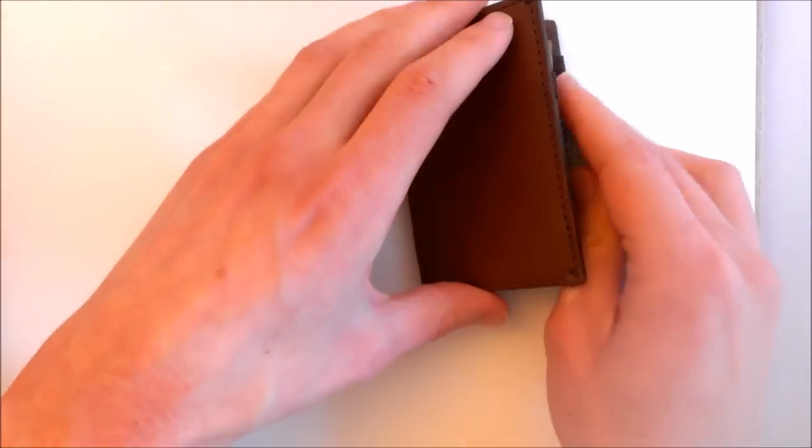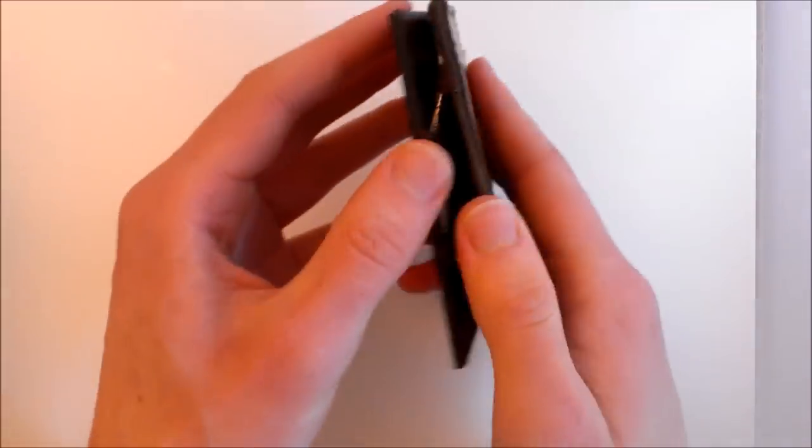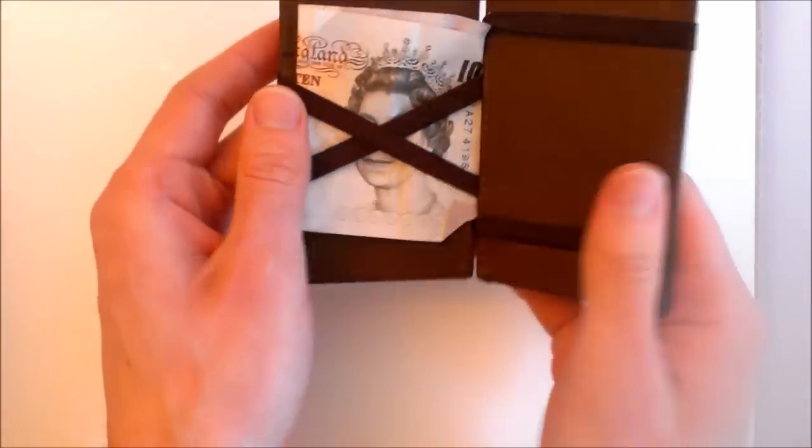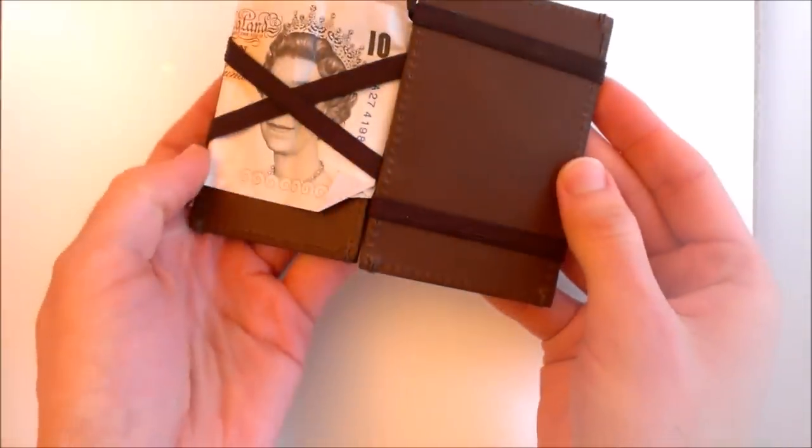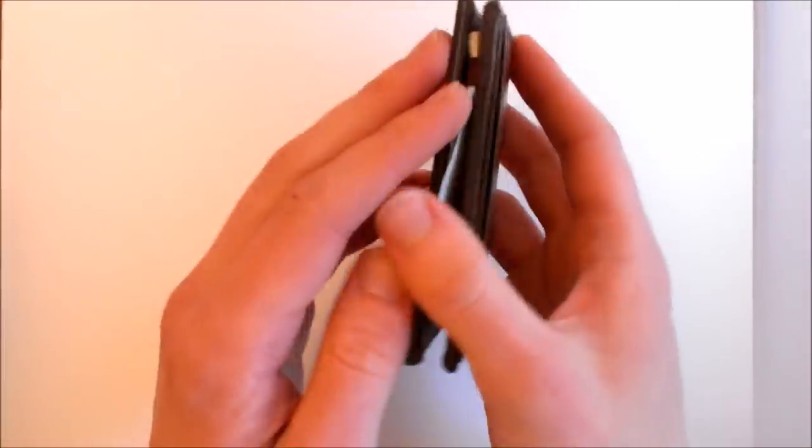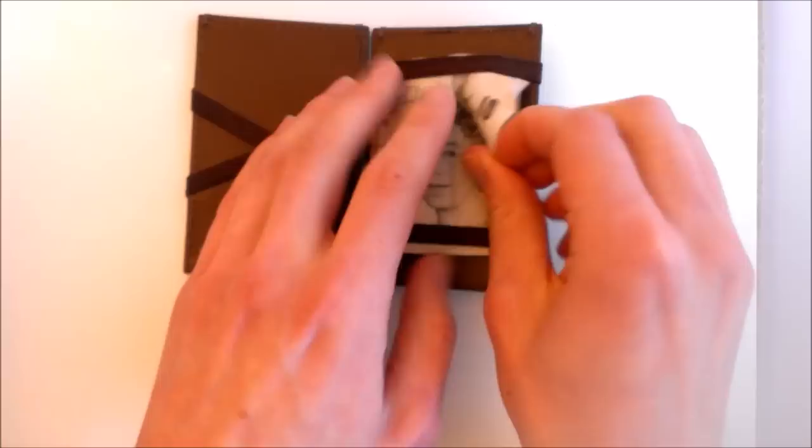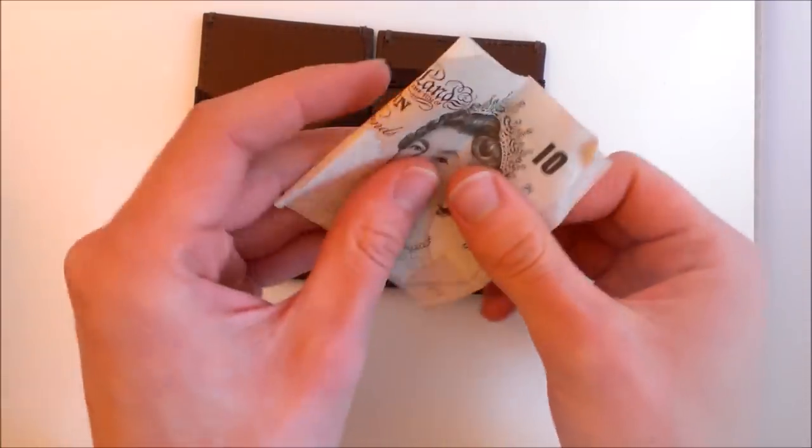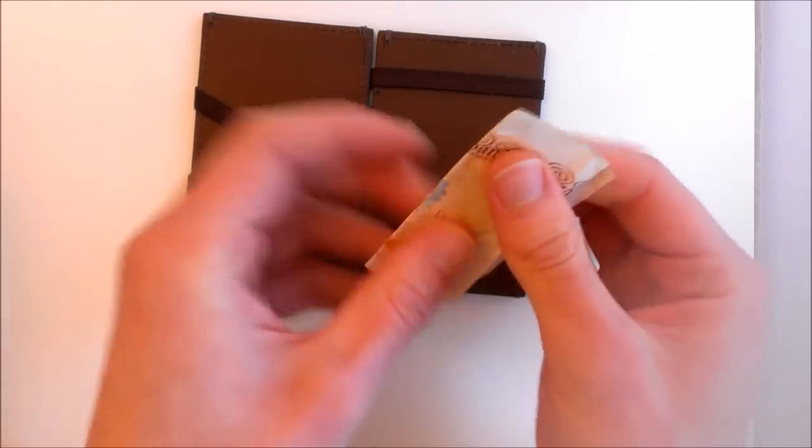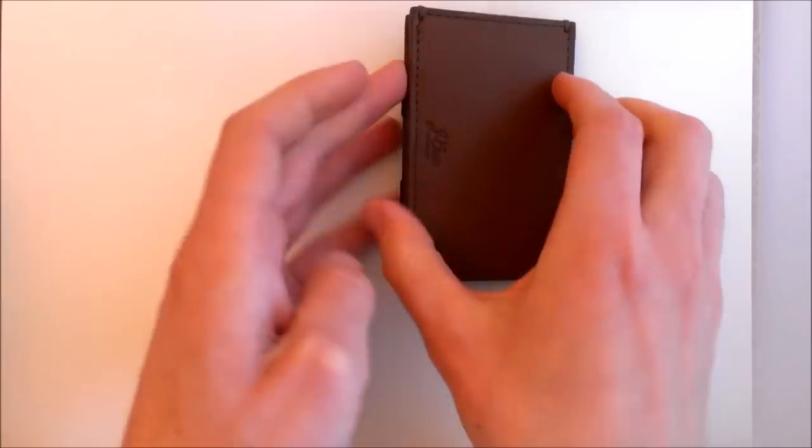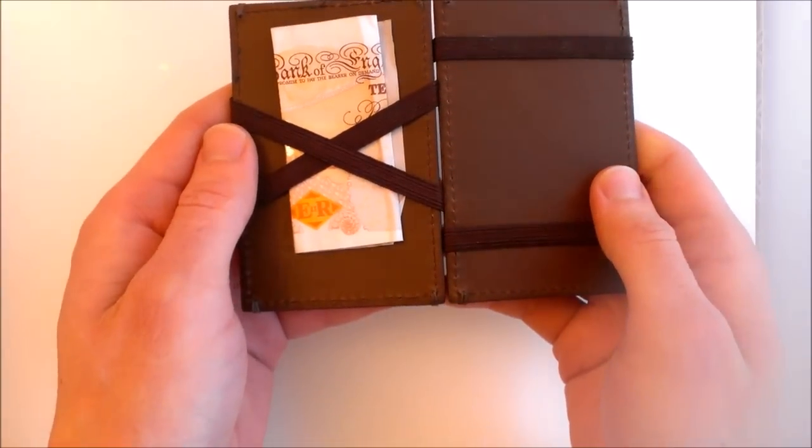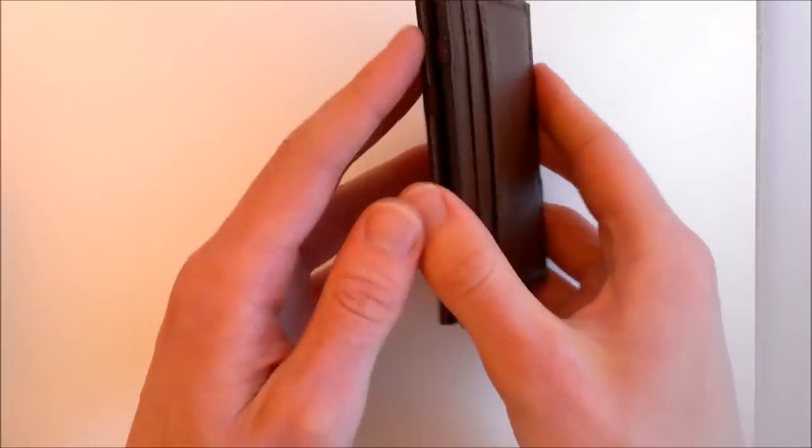With a ten pound note, you're going to see the slight problem we've got here in that it's catching in the middle there, and after a while that's going to tear, that's going to get really tatty. You can see right in the middle there it's catching because this is another American design wallet, designed for dollars. So all we're going to need to do is just fold this into quarters and then it's going to be absolutely perfect. You're just going to have to fold your notes a little bit more.